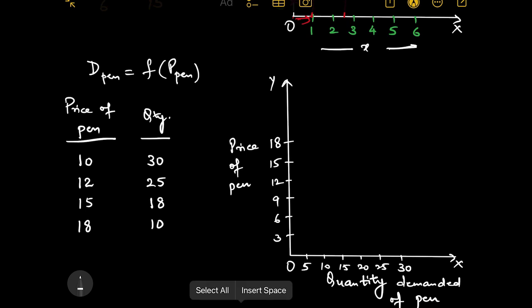We have derived a schedule here, a table which shows the relationship between price and quantity demanded of pens. It could be different for you, it could be different for a third person. But let us say this is my demand. If the price of pen is 10, I am going to buy 30. If the price is 18, I am going to buy 10 pens.